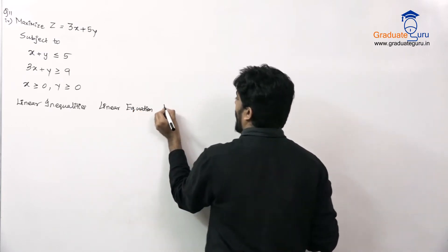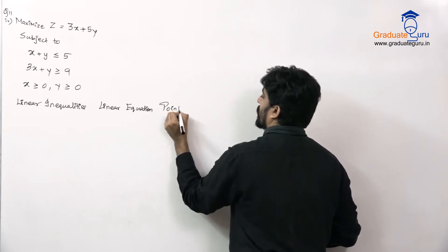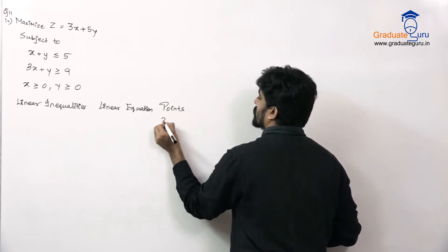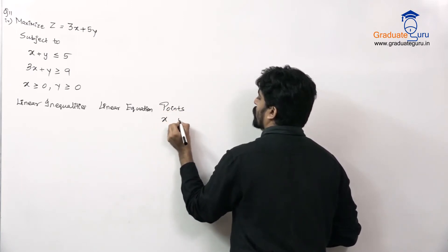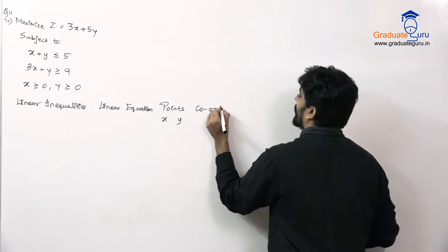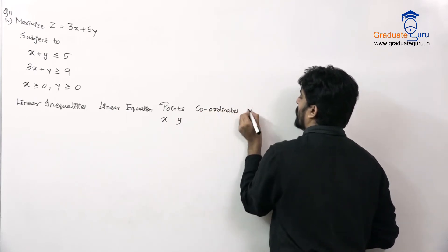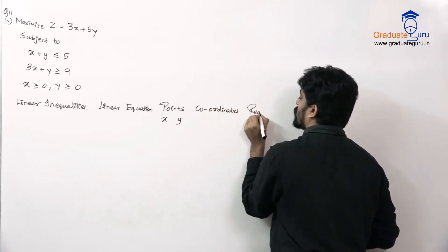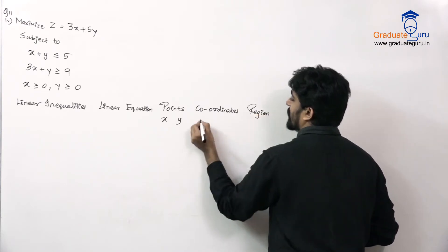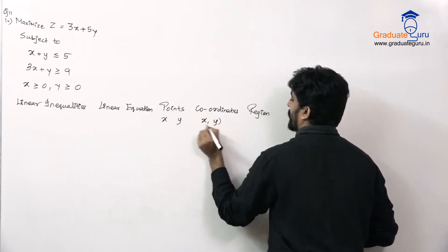Then we have points — where x links and y links — and then we have coordinates. And then we have the region part. In coordinates, we will write it as x comma y.